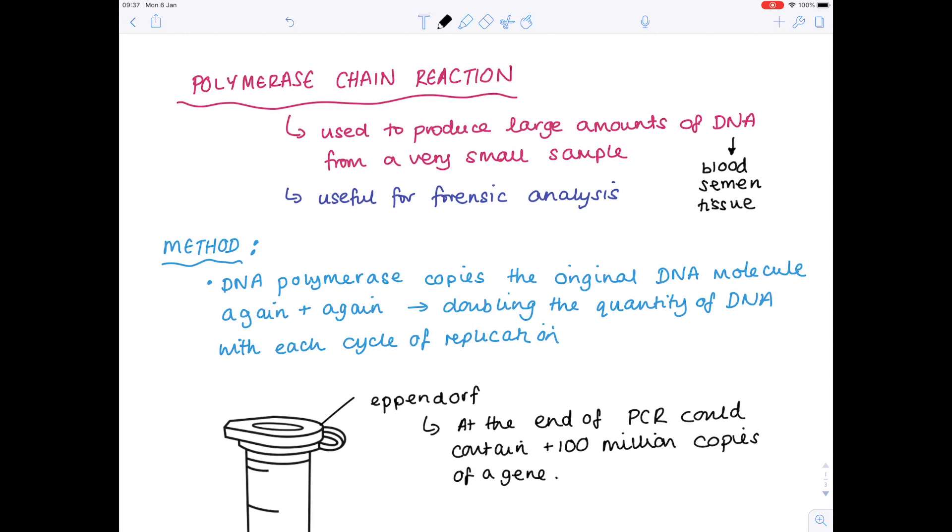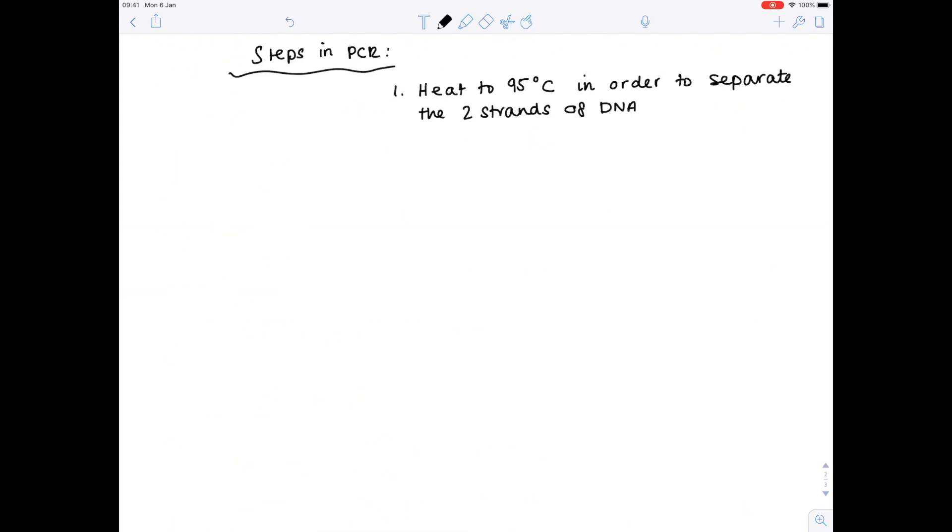Now I'm going to talk about how we carry out the polymerase chain reaction in greater detail. Your specification may not need it so make sure you double check. Now we're going to have a look at the steps involved in PCR. So I've already written the first step which is to heat to 95 degrees Celsius in order to separate the two strands of DNA because remember DNA is a double-stranded molecule.